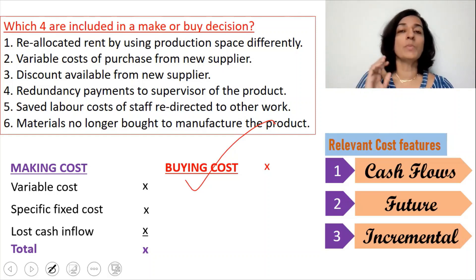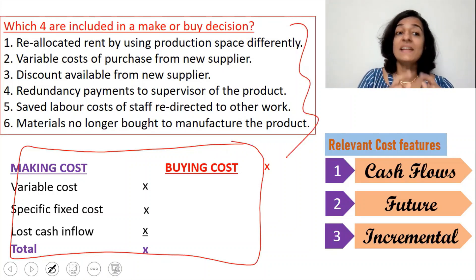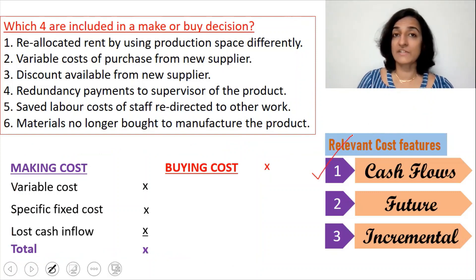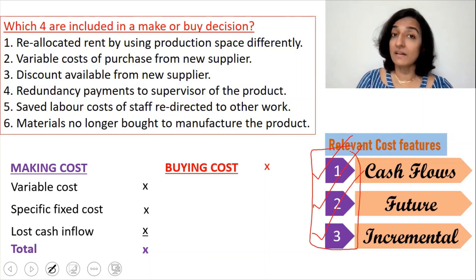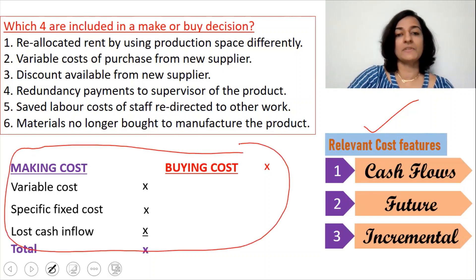If any of these four items appears in this list, we must include it. In case an item does not figure in the making cost list or the buying cost, we go by the relevant costing principles. The relevant costing principles are: it should be related to cash flows (either a cash outflow or a lost cash inflow), it should be related to the future, and it should be incremental or an additional expense. If all three conditions are satisfied, we include it in the make or buy decision. This is just for easy reference — the making cost and buying cost format.